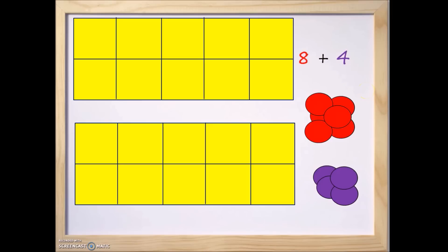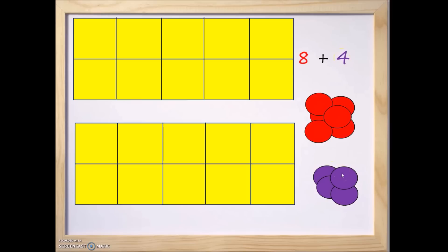And if you want to do this at home, you can draw the 10 frames. I have two of them — one up here, it's a rectangle with 10 squares, and the second one down here is for the number 4. The one on top is for the number 8, and the one on the bottom is for the number 4. I'm going to be using two different colors: for the number 8, I'm going to use these red counters, and for the number 4, I'm going to be using these purple counters.